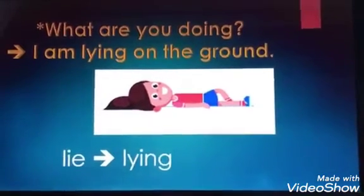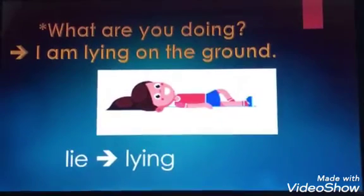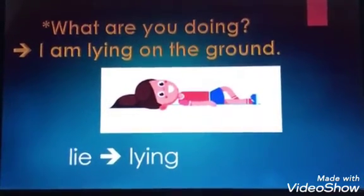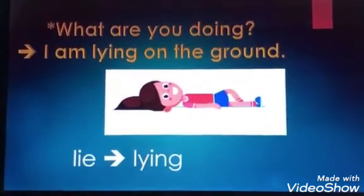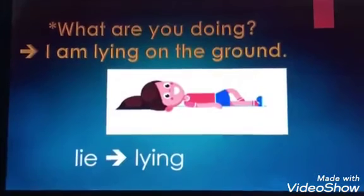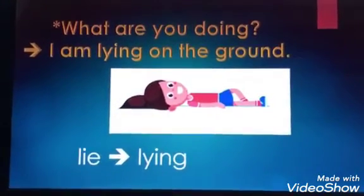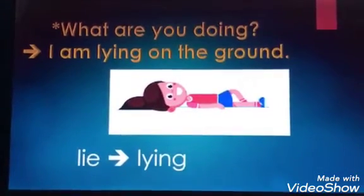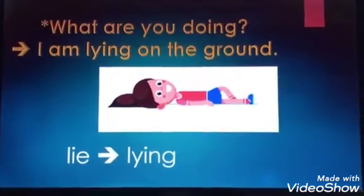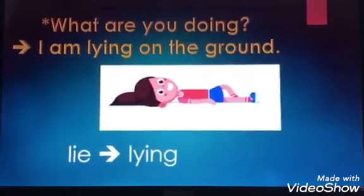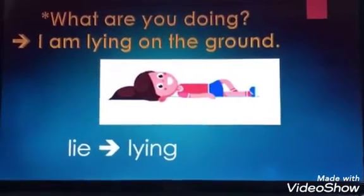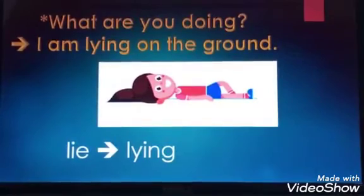Look at this girl. What are you doing? I am lying on the ground. Look at the verb 'lie', spelled L-I-E. When I wanted to put 'ing' to the verb lie, I couldn't put it beside the 'e'. So, I crossed both 'i' and 'e' and put 'y' instead. If the verb ends in I-E, I cross both of them, write 'y', and then add 'ing'. Like: lie → lying, die → dying, tie → tying.